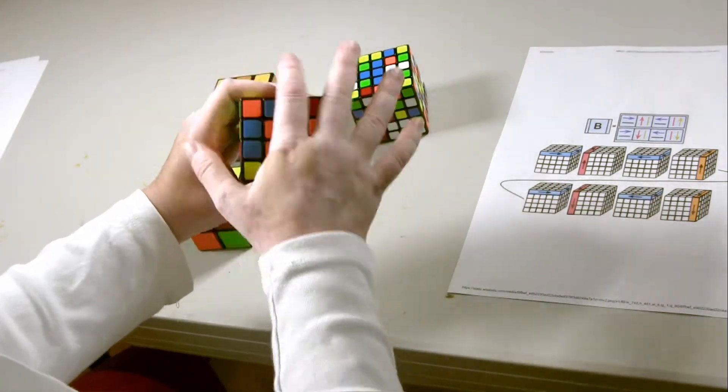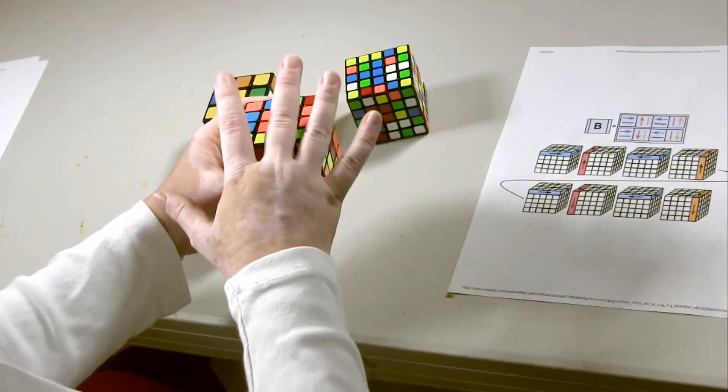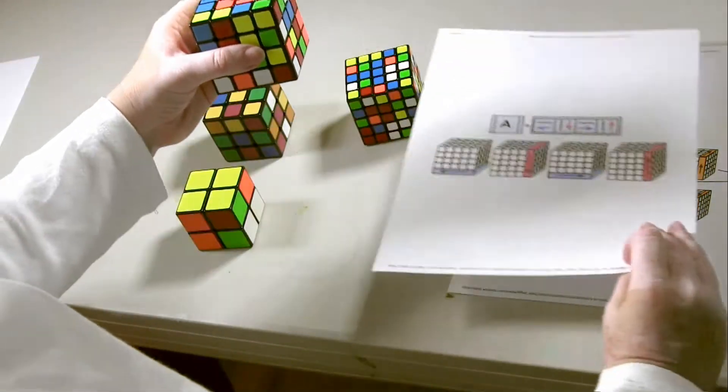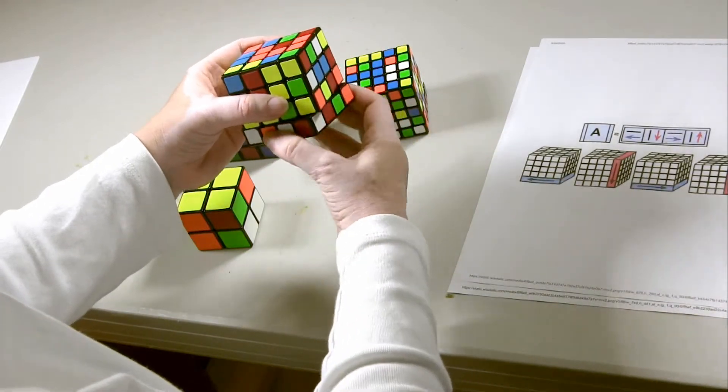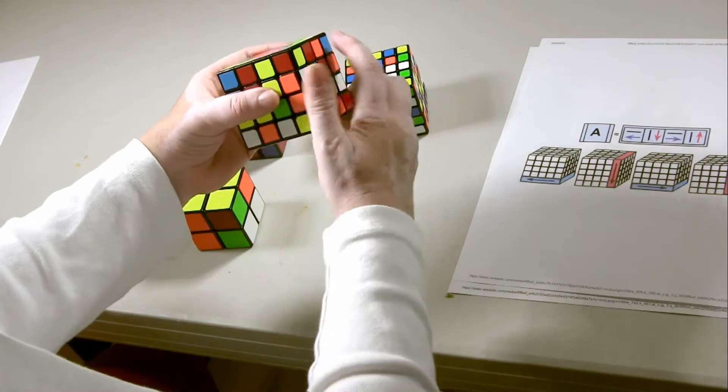Now, this is going to look like it's messed up, but it isn't, it's repositioned all the corners. Now, we're going to do Formula A again to bring the color back to the top again. Out, down, in, up. Out, down, in, up.